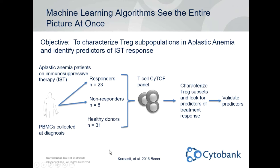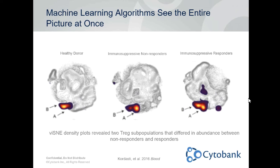In their study design, they had aplastic anemia patients undergoing immunosuppressive therapy and collected peripheral blood mononuclear cells at diagnosis, then assessed after therapy whether individuals responded or not. They ended up with a cohort of responders, non-responders, and healthy donor individuals. Afterwards, they used a T-cell focused mass cytometry panel to characterize the T-cell compartment and had the tedious task of analyzing the data, characterizing the Treg subpopulation, looking for predictors of treatment response, with a testing and validation set available.